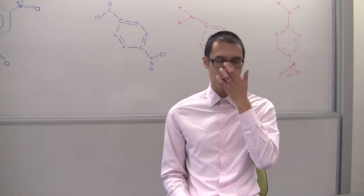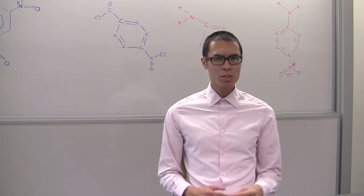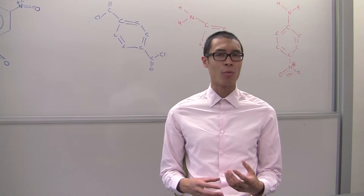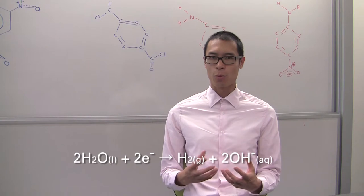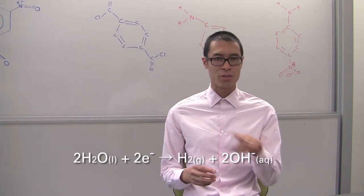Now in terms of the chemistry: at the cathode you have reduction. Water is being reduced to form hydrogen gas and hydroxide ions, and that will react with the phenolphthalein and cause the area surrounding the nail to turn pink.